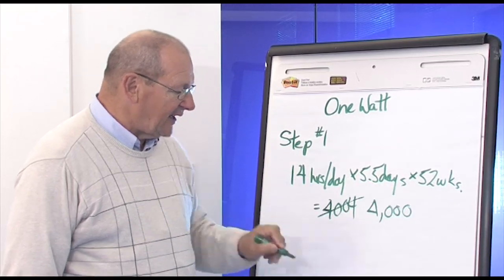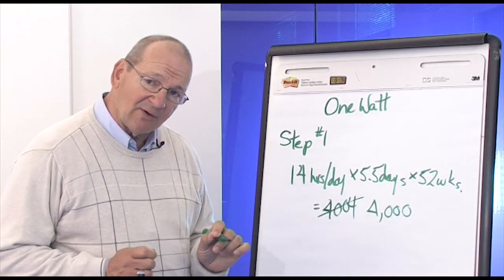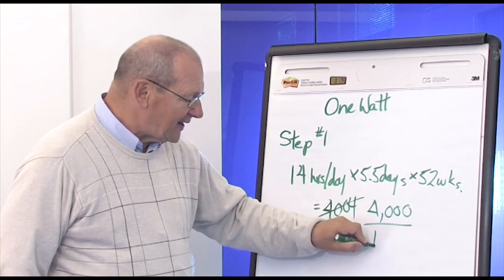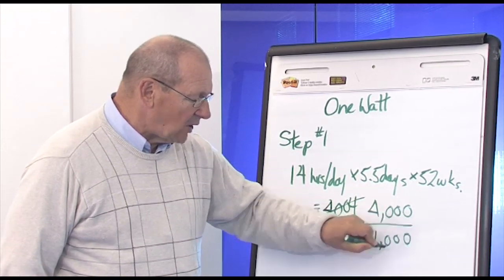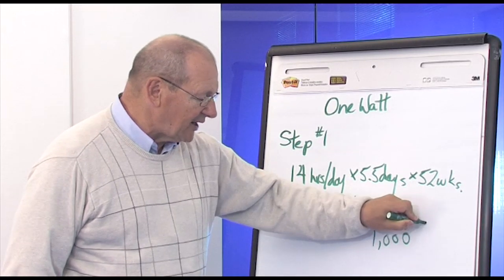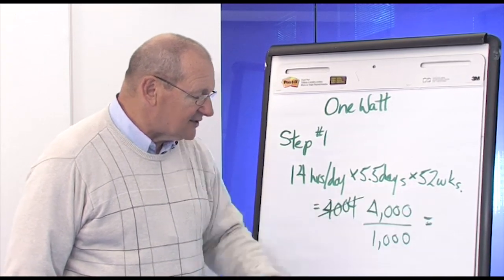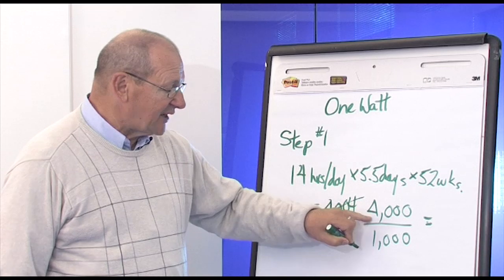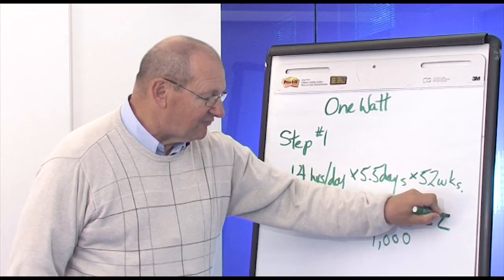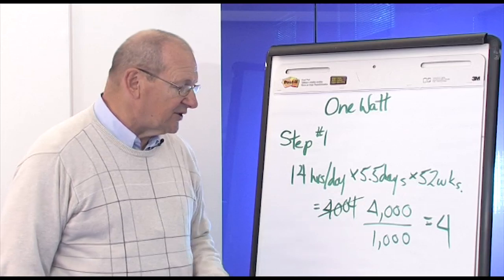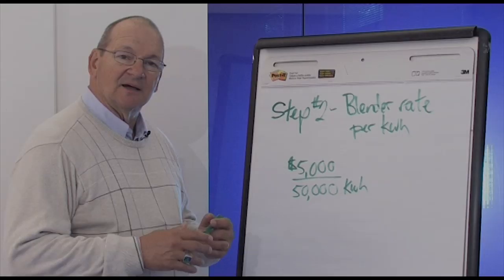And then, to get the hours in units of 1,000, divide by 1,000. Because you're going to be multiplying this times a kilowatt hour, and that is in units of 1,000. So we've got to get our hours that way. That means we have 4 units of 1,000 hours.